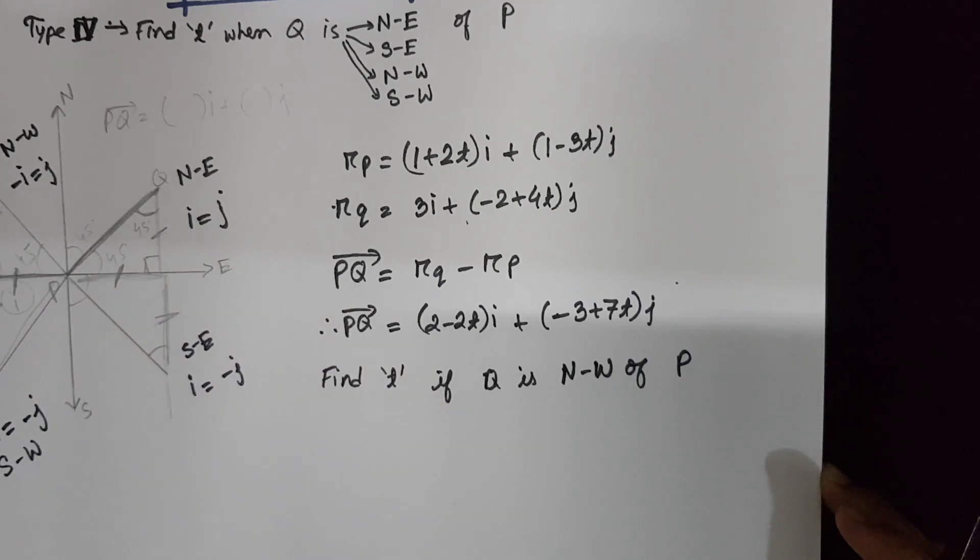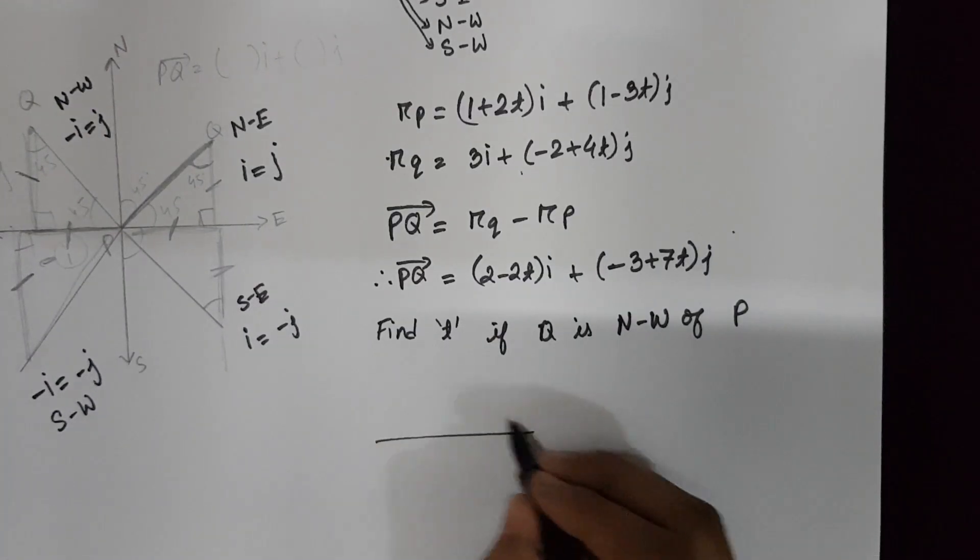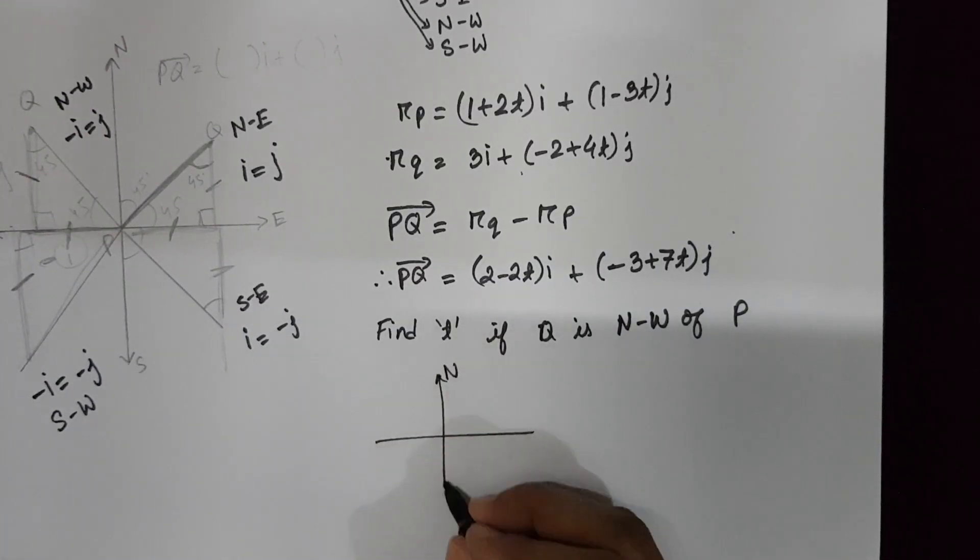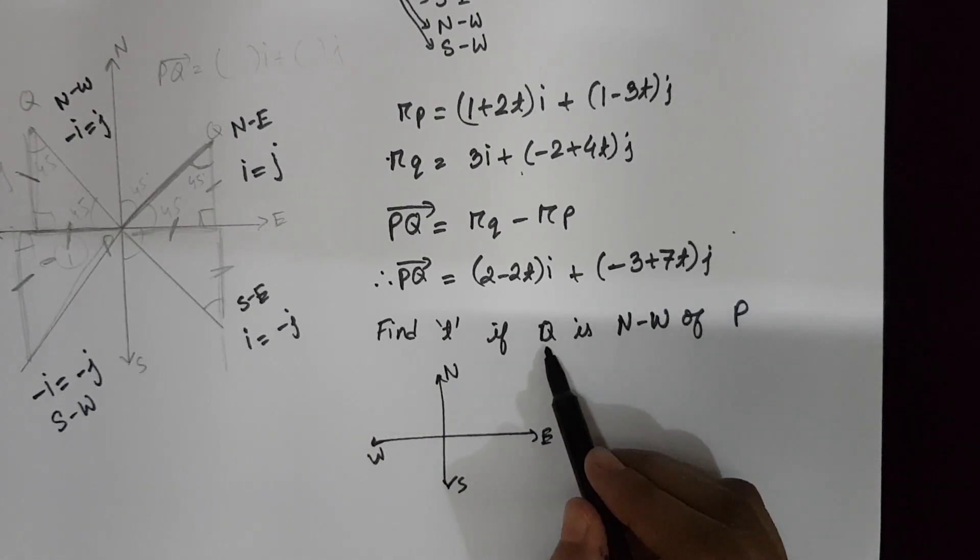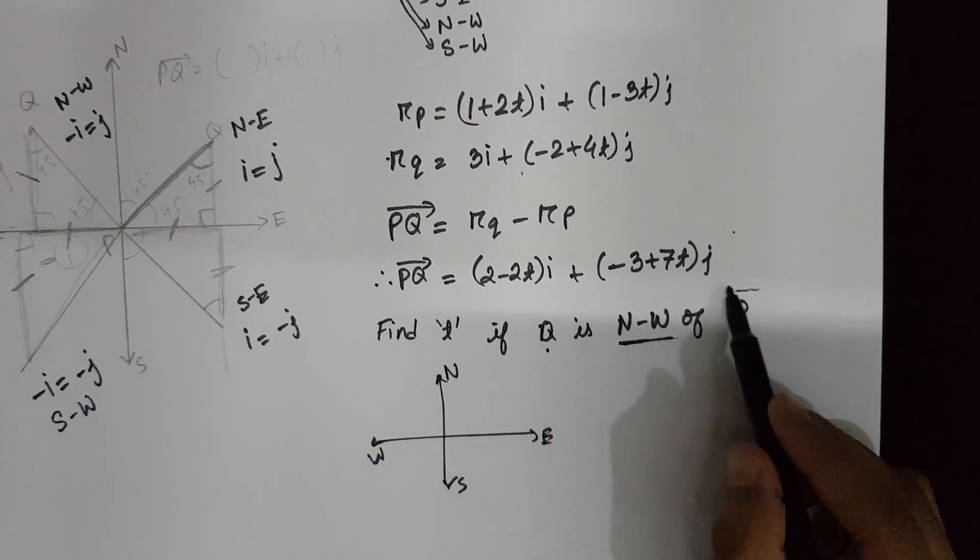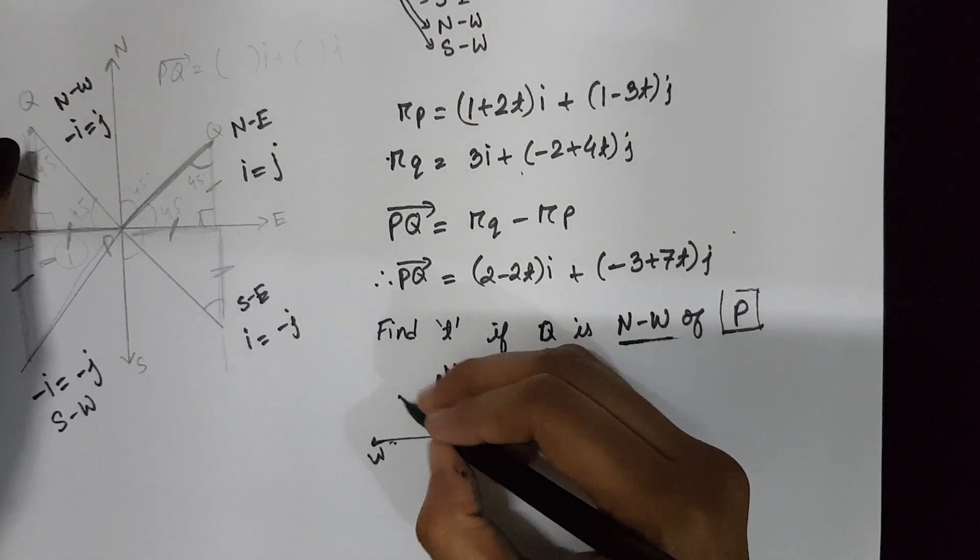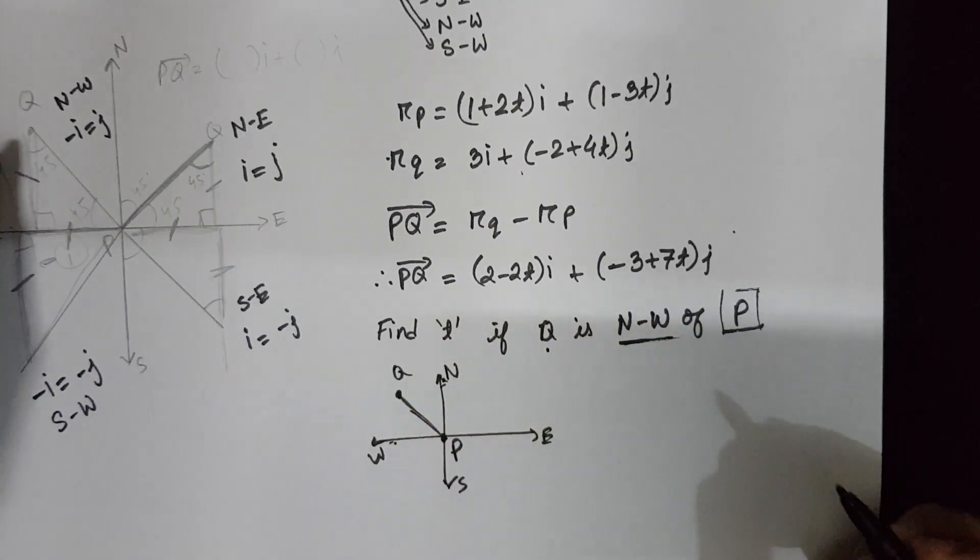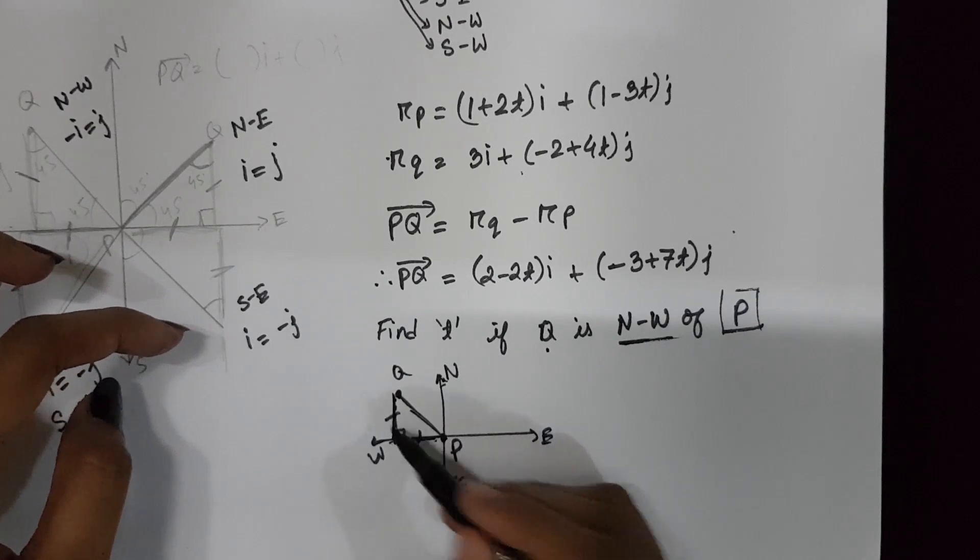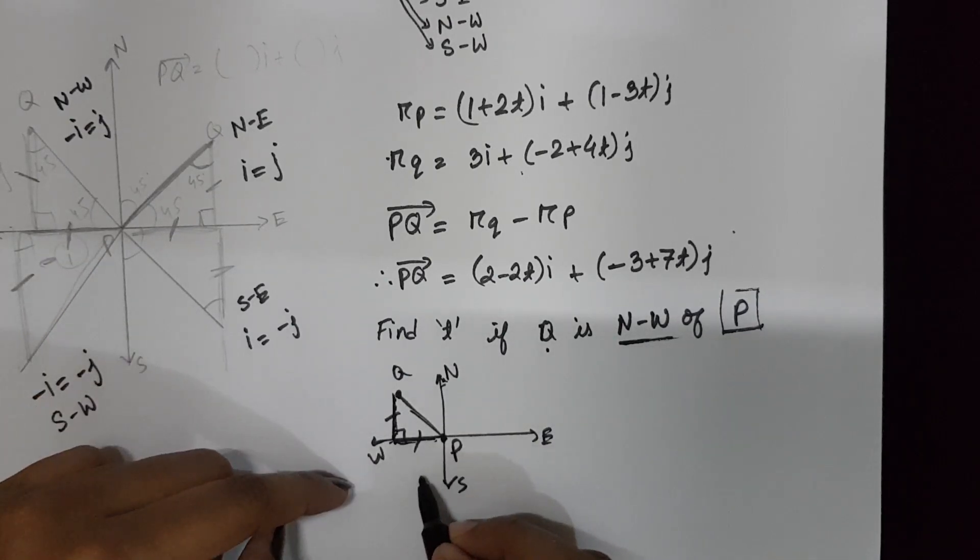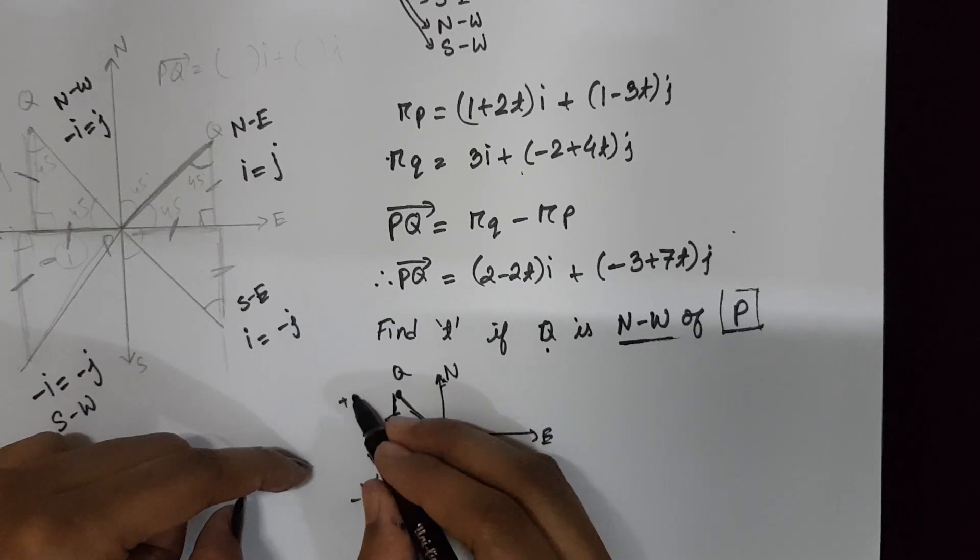You can memorize the formula here for north-west, or you can just draw a random north-south-east-west diagram. Particle Q is north-west of P. The center will be P. That's your north-west direction. This is your point Q. If we draw any right-angled triangle, this is your I and this is your J. You can see that I coordinate is negative and the J coordinate is positive.